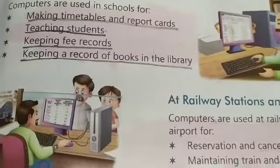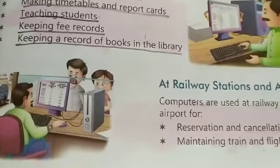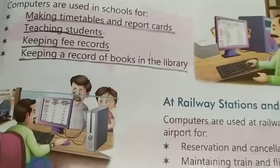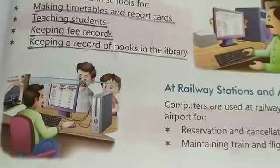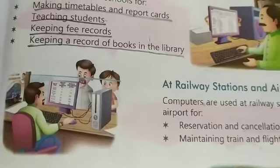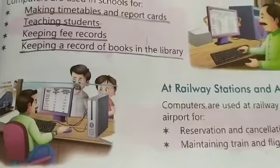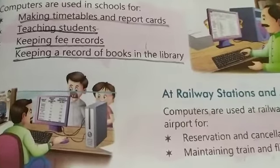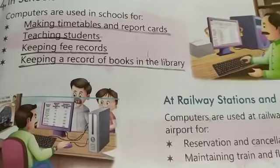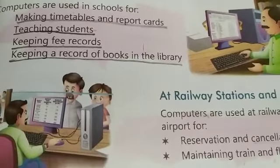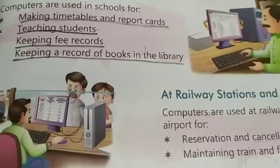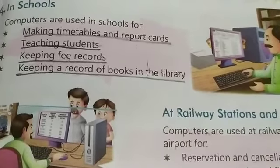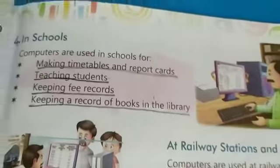Us returning date pe bachche ne di hai ya nahi di — sari details usmein hoti hain. Library mein kis subject ki kitni books hain, total kitni books hain — yeh sari chizein detail mein rehti hain. Saath hi saath bachcho ka bhi record hota hai computer mein — konsa bachcha hai, uska naam kya hai, guardians ka naam kya hai, date of birth kya hai, kahan rehta hai — yeh sari details computer mein hoti hain school ke. Toh itna aapne dekha tha.